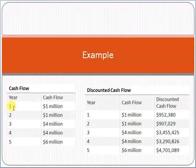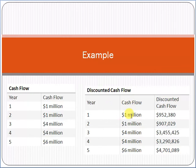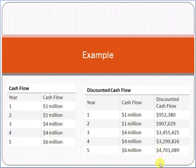For example, if the cash flow after year 1 is $1 million, after year 2 is $1 million, after year 3 is $4 million, after year 4 is $4 million, and after year 5 is $6 million — applying the discounted cash flow formula gives: year 1 DCF = 952, year 2 = 907, year 3 = 3,455, year 4 = 3,290, and year 5 DCF = 4,701.